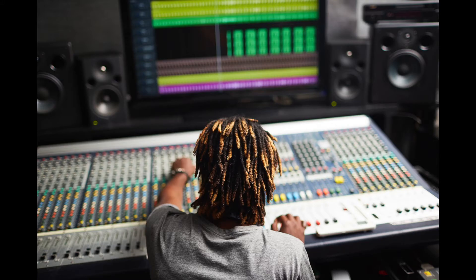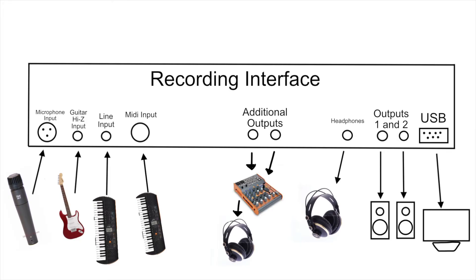In studios with a large analog mixing board, they take the additional outputs of their recording interface and send individual channels out to that mixing board, do the mixing analog on that board, and record the output of the mixing board back into the line inputs of the recording interface. That way they still have the convenience of digital recording but get the sound of the traditional analog mixing board.